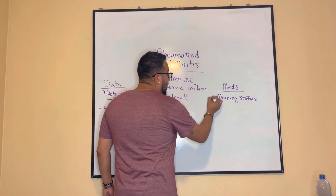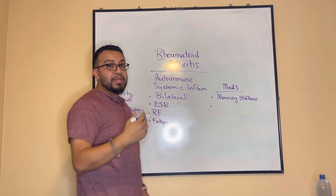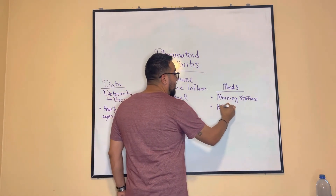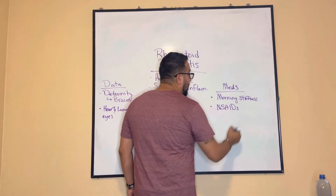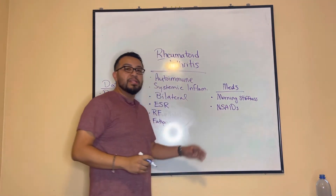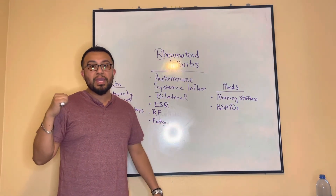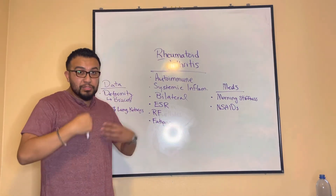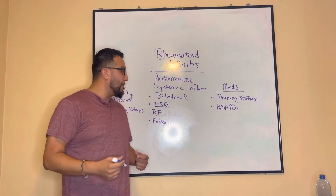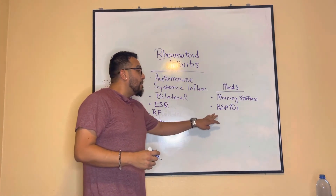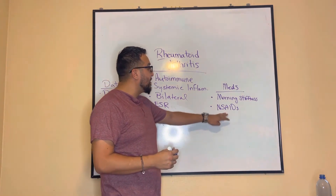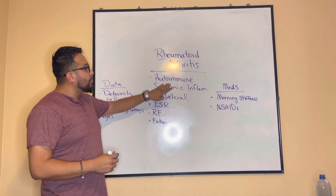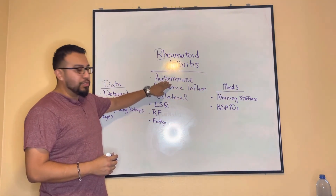After considering those elements, you start talking about medications. RA patients will be taking NSAIDs, and you have to consider the same issues discussed in OA — potential kidney issues, gastric irritation requiring food intake, things like that. However, remember that NSAIDs decrease inflammation but don't really address the underlying autoimmune issue.